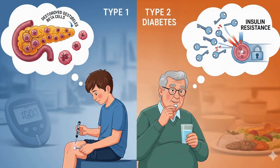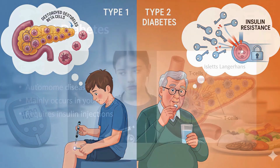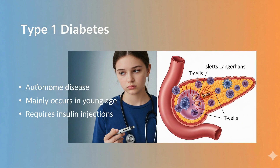Diabetes mellitus mainly has two large subgroups. Type 1 is an autoimmune disease that mainly occurs in young age due to destruction of insulin-secreting cells, and requires insulin injections as a treatment for the lack of produced insulin.